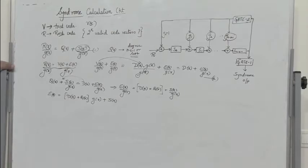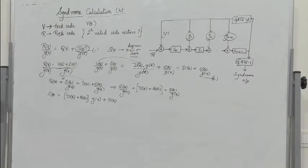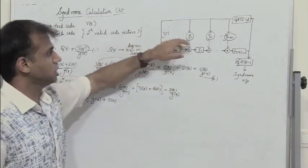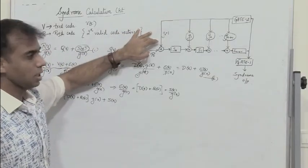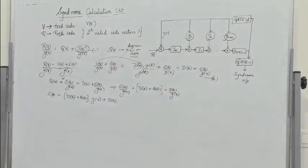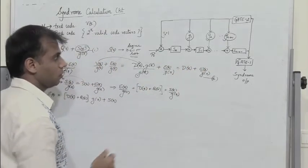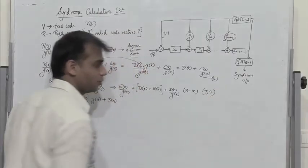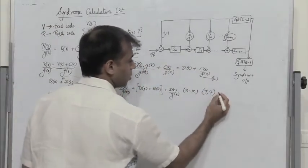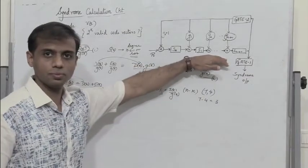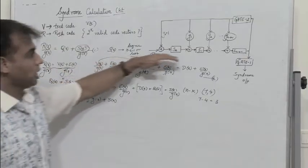A generalized syndrome calculation circuit is shown here. The flip-flops are indicated, along with modulo-two adders. G0, G1, G2, etc. are the coefficients of the generator polynomial — a switch is closed if the coefficient is 1 and open if 0. The number of flip-flops is always equal to N minus K. Since we are considering a 7,4 cyclic code, the number of flip-flops is 7 minus 4 equals 3, giving us S0, S1, and S2.